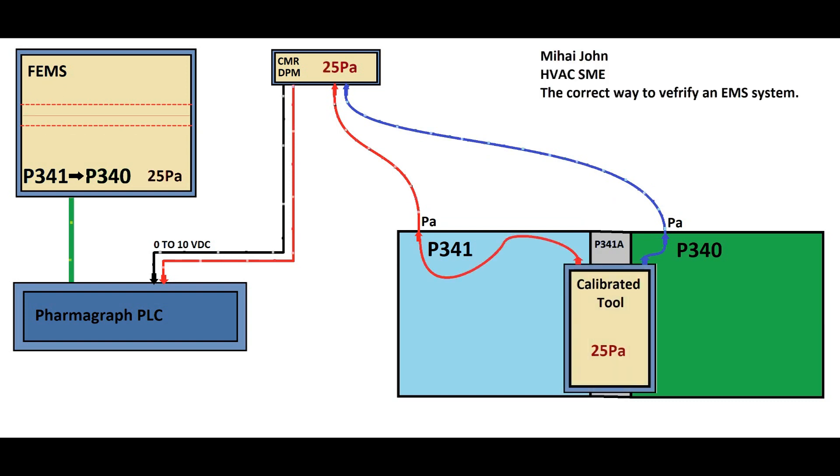This test involves connecting the calibrated tool to the room's tube, allowing comparison of data readings between the calibrated tool and the PharmaGraph front-end panel. Successful alignment in data readings validates the accuracy and reliability of FEMS.